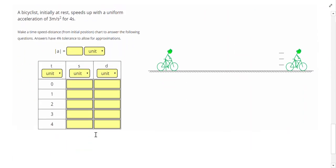Our next question asks us to fill out a time speed distance chart. So our time will be measured in seconds, speed measured in meters per second, distance measured in meters, and acceleration in meters per second squared. So our problem says a bicyclist initially at rest speeds up with a uniform acceleration of 3 meters per second squared for 4 seconds. So 3 meters per second squared is going to be our acceleration. Initially at rest tells me that my speed starts at 0, and my speed will increase by 3 meters per second every second. So the speed, I can just count up by 3's.